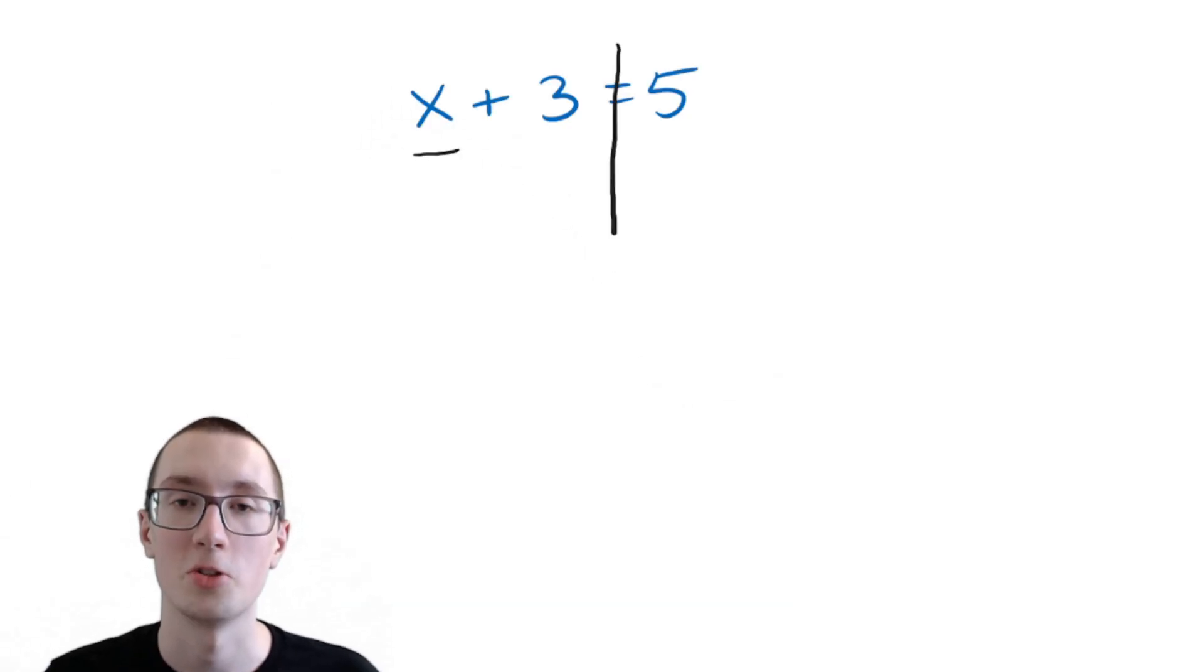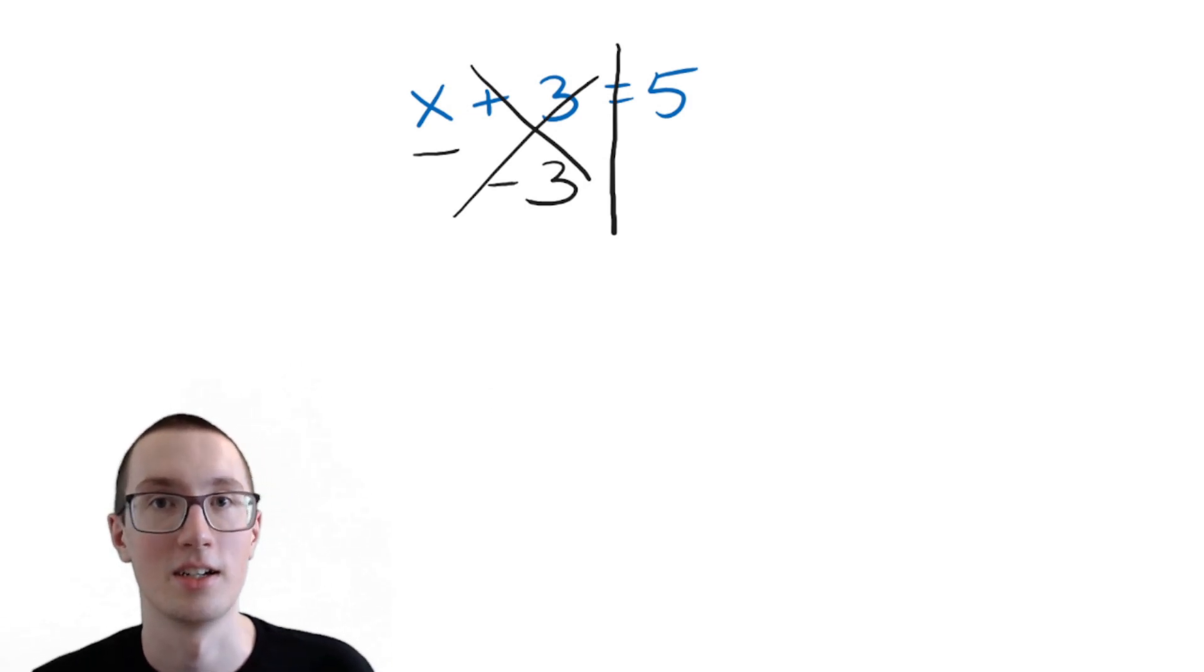So in this case, we want to do something to the left side of equation that's going to cancel out this plus 3. So let's do the opposite of plus 3. The opposite of adding 3 would be subtracting 3. So if we subtract 3, then we cancel out these two things, because if I gave you $3 and then took it away, well, your total amount of money didn't change, and your feelings would probably hurt.